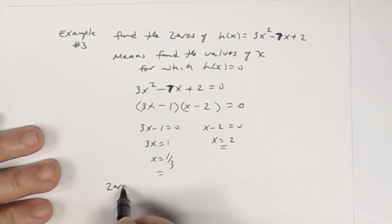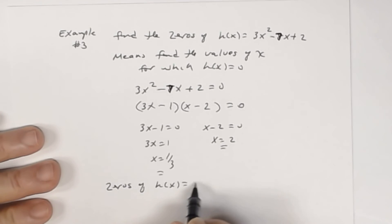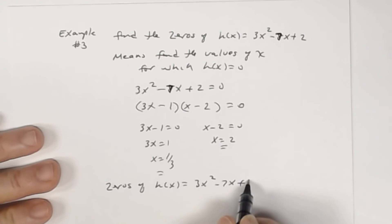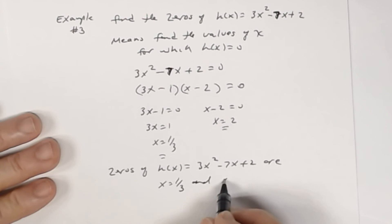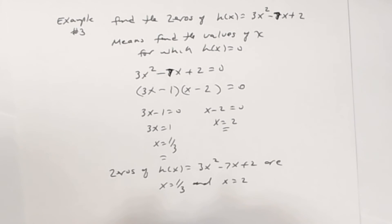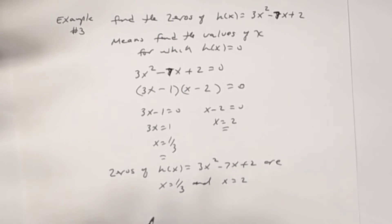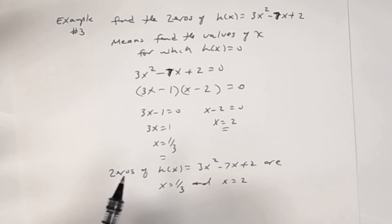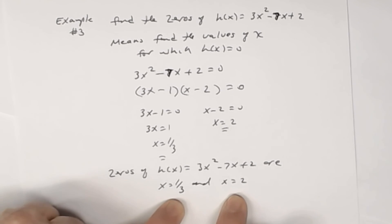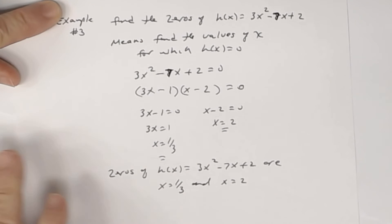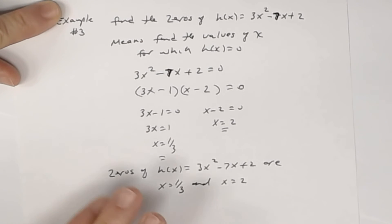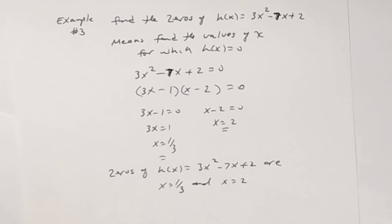So the zeros of h of x, which equals 3x squared minus 7x plus 2, are x equal one third and x equal 2. This review should help for the next lesson. What's going to happen next is you'll be given zeros and asked to come up with the quadratic or polynomial function — basically, we're going to work backwards in the next lesson.